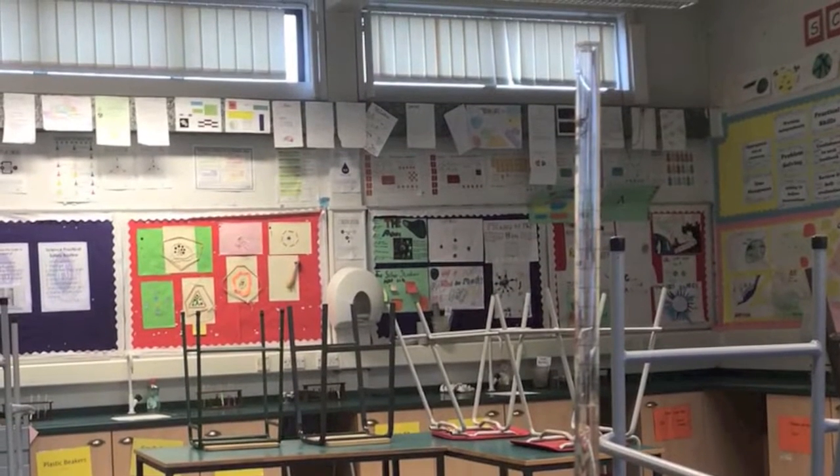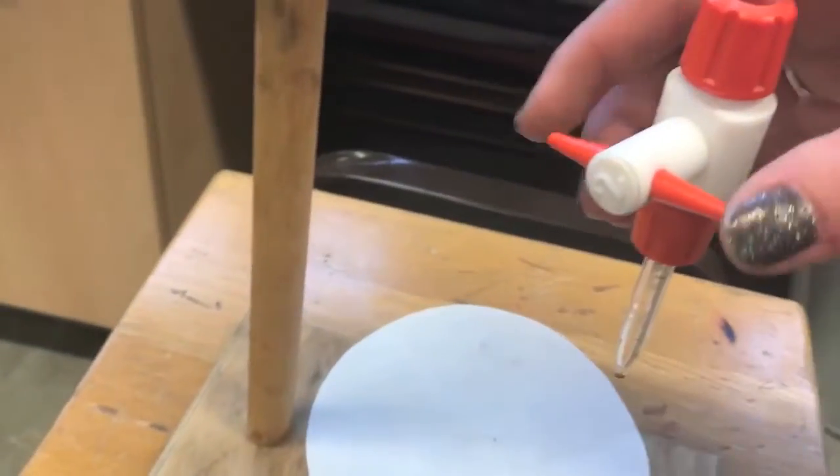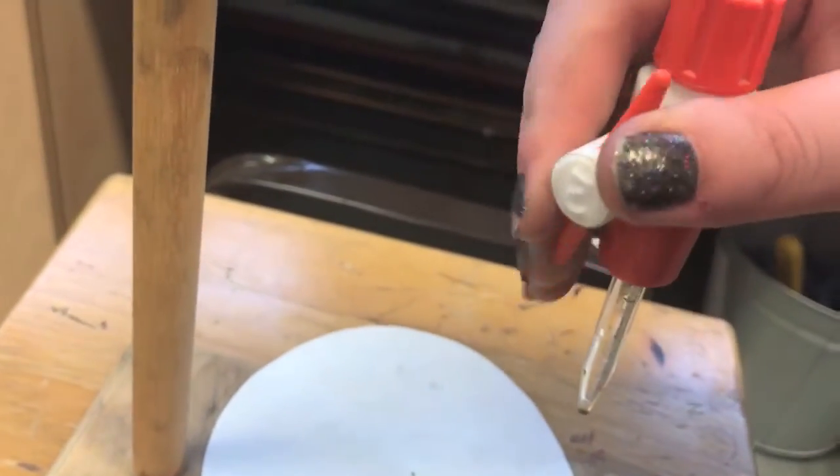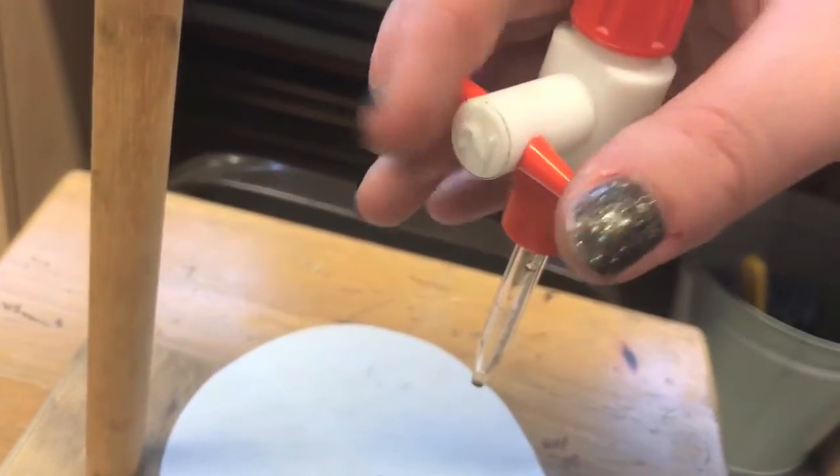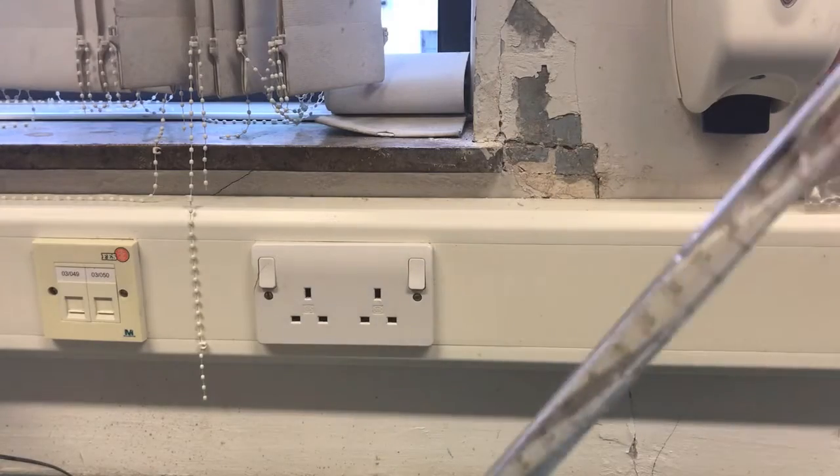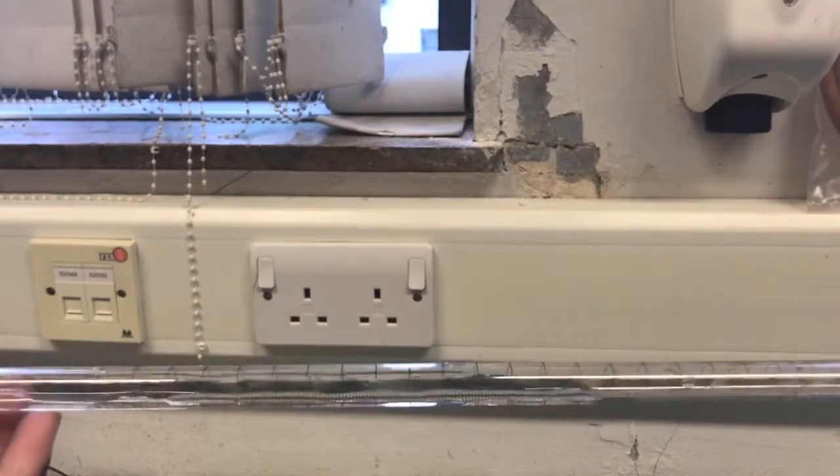The burette must first be rinsed with a little of the solution which will be used to fill it. Make sure the tap is closed before doing this. On this burette the tap is open when it is in line with the burette and closed when it is horizontal. The burette is turned on its side and rotated to rinse the whole burette using the minimum volume of solution.